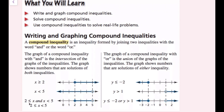So '2 is less than or equal to X' is equivalent to 'X is greater than or equal to 2, and X is less than 5.' We can combine the AND statements into a compound inequality: 2 ≤ X < 5. That just means the values in between 2 and 5, including 2, not including 5, are the solution set.